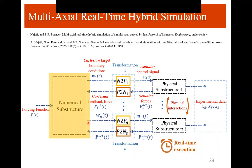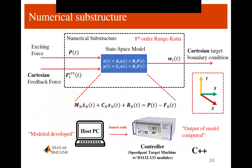The input into the numerical substructure is any excitation force — earthquake, tornado, train load — plus the feedback force from the load cells. The numerical model is constructed via governing equations or finite element modeling, converted to a state-space model and developed in MATLAB Simulink, which is compiled into source code running on the controller. The output is a Cartesian target boundary condition — meaning X, Y, and Z coordinates. The numerical substructure uses an eighth-order Runge-Kutta algorithm.